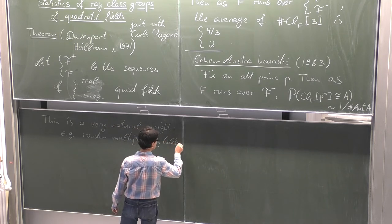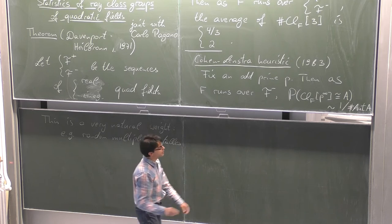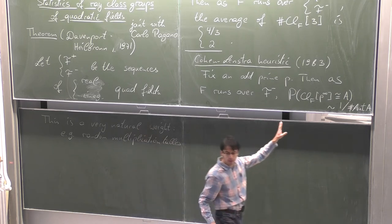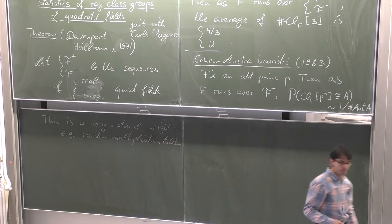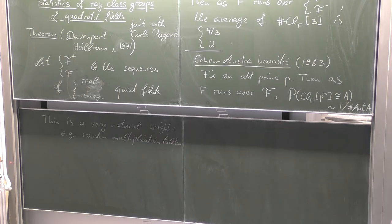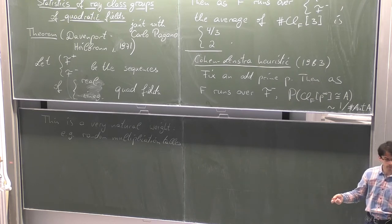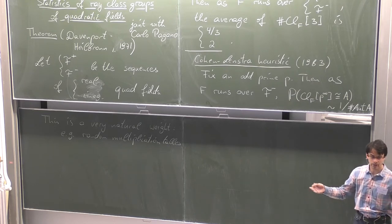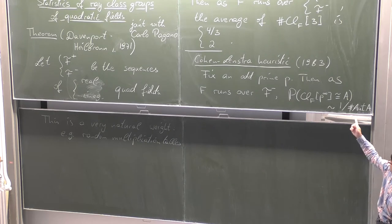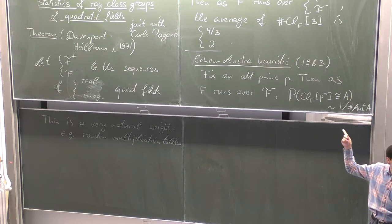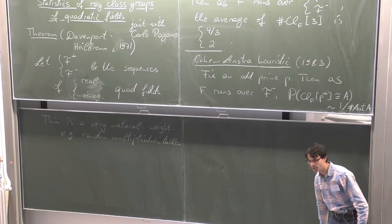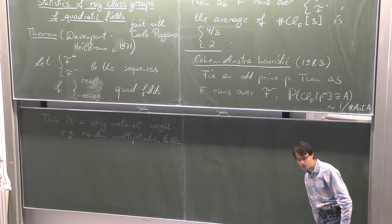It gets much better. If you say, wait, but this is an abelian group — you could produce an abelian group by taking lots of generators and imposing random relations on them. Miraculously, it turns out that you also end up with these weights. So it's a very robust kind of probability distribution.